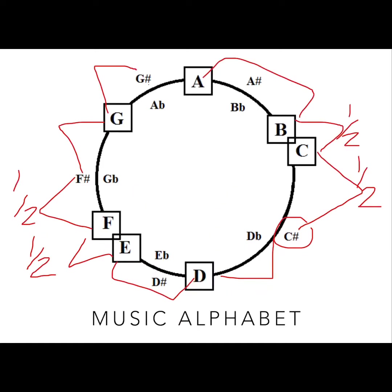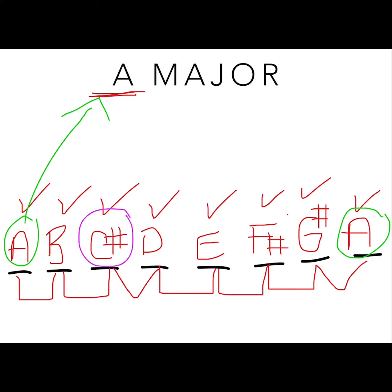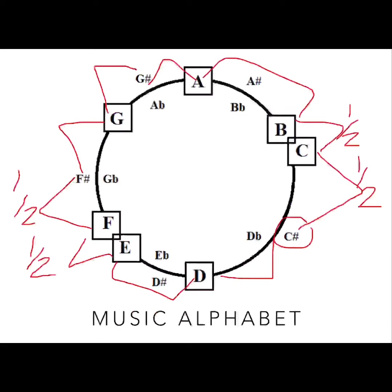Finally, G sharp and A need to be a half step, and indeed they are. So the key of A major has three sharps: F sharp, C sharp, and G sharp. That is how we come up with key signatures for the keys we play in — they are created using the major scale formula. There's no randomness to it; we use that formula to determine the key signature.